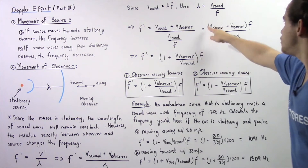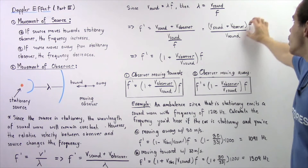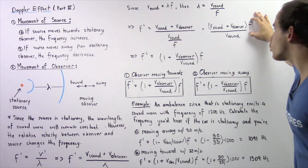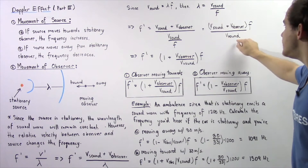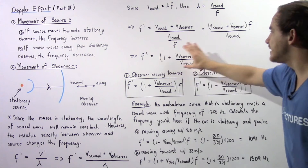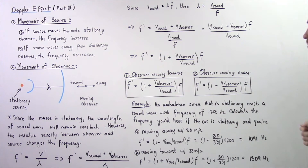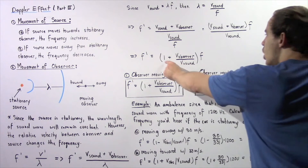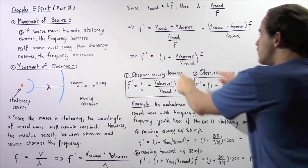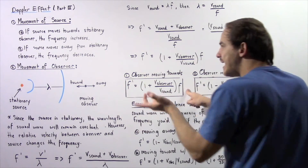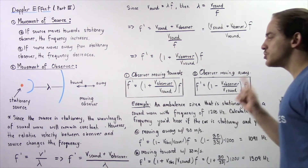f' equals v_sound plus v_observer — the relative velocity — divided by v_sound, multiplied by the original frequency. Dividing through, this simplifies to: f' equals the original frequency times (1 plus v_observer divided by v_sound). This equation applies when the observer moves towards the stationary source.